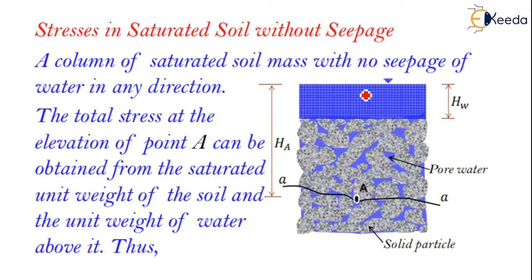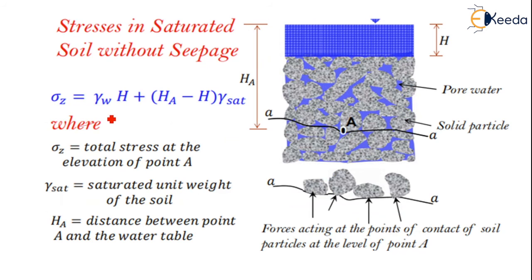For a column of saturated soil mass with no seepage of water in any direction, the total stress at the elevation of point A can be obtained from the saturated unit weight. The height from the water table is hw, and the height to point A is ha. The total stress at point A is: σz = γw · h + ha · γsat, where γsat is the saturated unit weight of the soil and ha is the distance between point A and the water table.